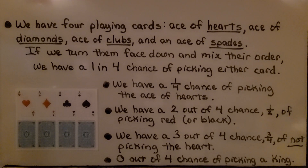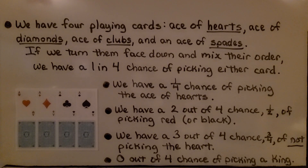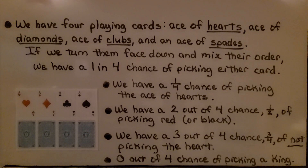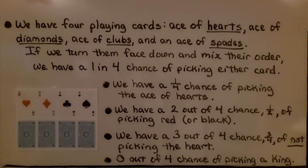Here we have 4 playing cards: an ace of hearts, an ace of diamonds, an ace of clubs, and an ace of spades. If we turn them face down and mix their order, we have a 1 in 4 chance of picking either card. We have a 1 fourth chance of picking the ace of hearts, a 2 out of 4 — or 1 half — chance of picking red or picking black, and a 3 out of 4 chance of not picking the heart, because 3 out of the 4 are not hearts. We have a 0 out of 4 chance of picking a king, because there are no kings — there would be a 0 chance.